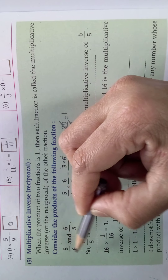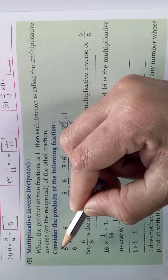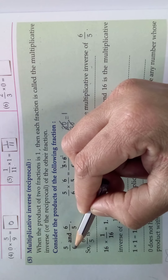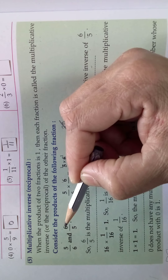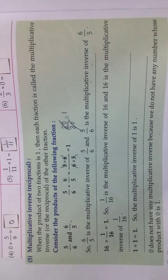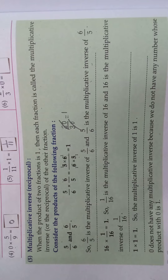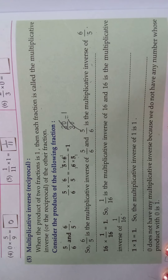So the inverse of 5/6 is 6/5. What is the inverse of 6/5? You should turn it — write it as the inverse, that is 5/6.